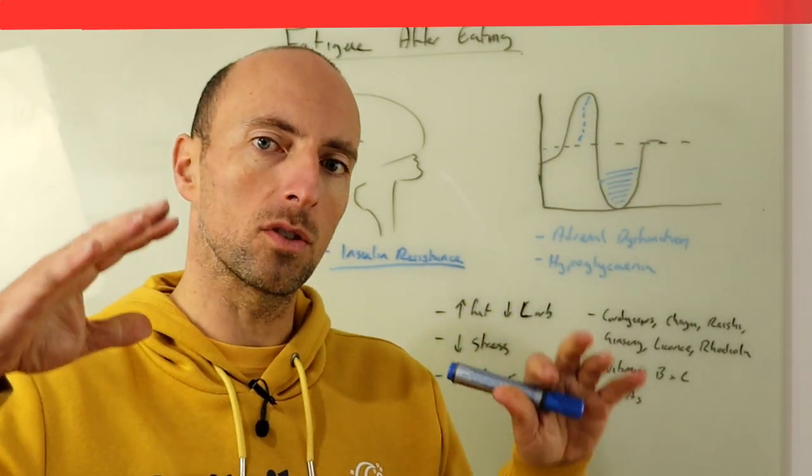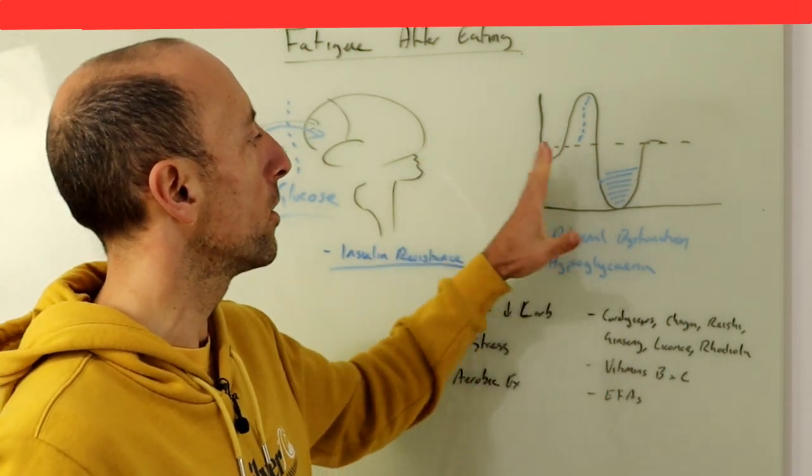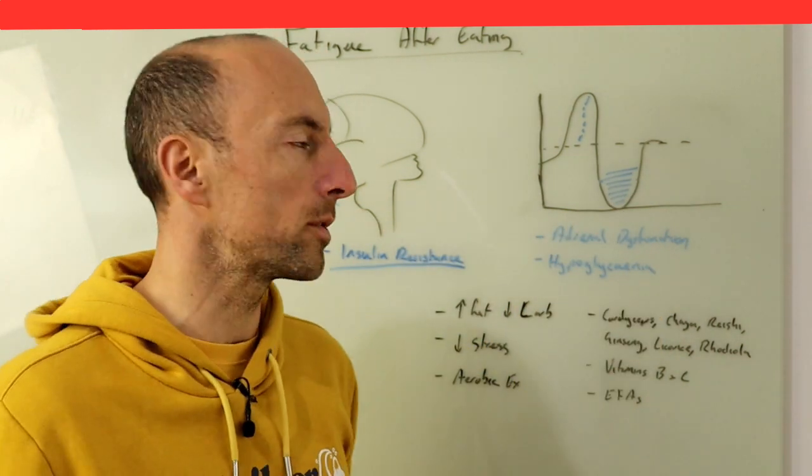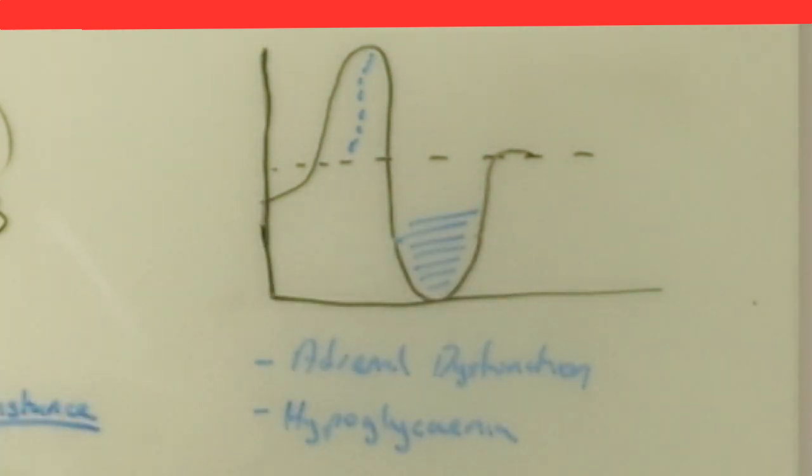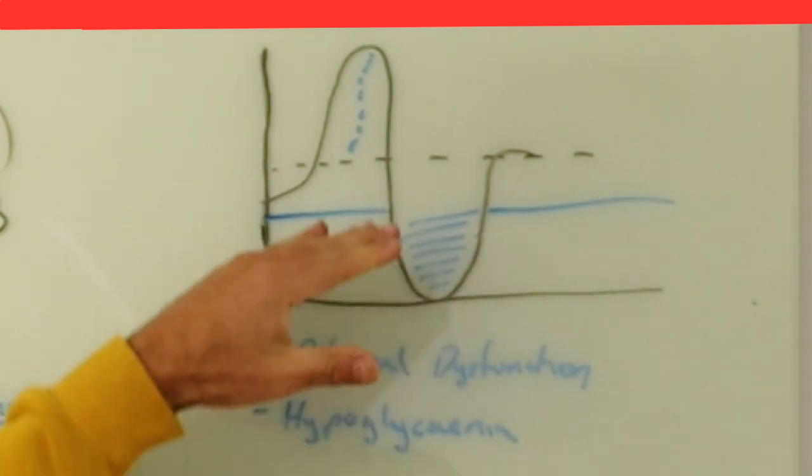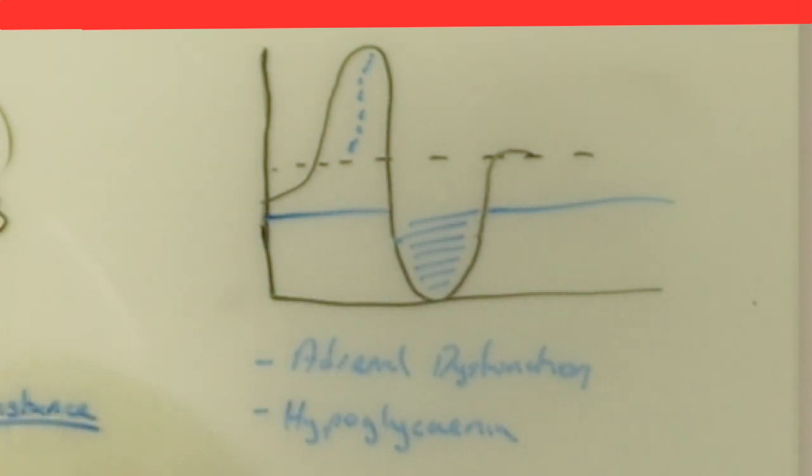So this is where blood sugars drop dramatically after you've eaten so in other words your post eating glucose levels are actually lower than your fasting glucose levels which is a real problem and one of the big things which happens with this is that once it drops below a critical point, once our glucose levels drops below a critical point our adrenal glands will kick in.